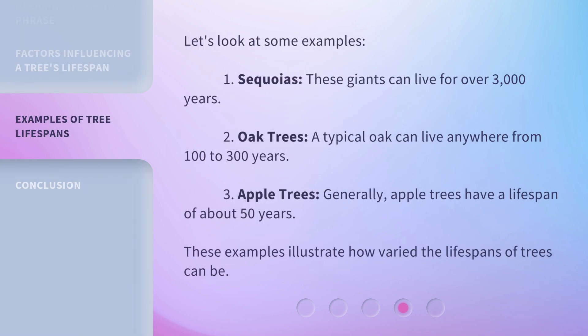Let's look at some examples. Sequoias — these giants can live for over 3,000 years. Oak trees — a typical oak can live anywhere from 100 to 300 years. Apple trees — generally, apple trees have a lifespan of about 50 years. These examples illustrate how varied the lifespans of trees can be.